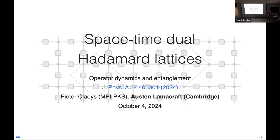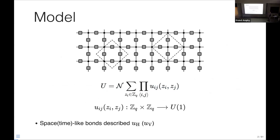The nice thing about this is that most of the physics can be understood in a purely graphical way, and in particular this notion of space-time duality, which I'll explain, can be seen very easily. I'm interested in many-body dynamics and discrete space and discrete time, the sort of thing appropriate for a quantum circuit or quantum communication. We have a system of q-dits, so q-dimensional local Hilbert space, q degrees of freedom, with q equals 2 corresponding to qubits. I'll introduce the model in a statistical mechanical way, and then we'll see the properties of local evolution or quantum circuits.